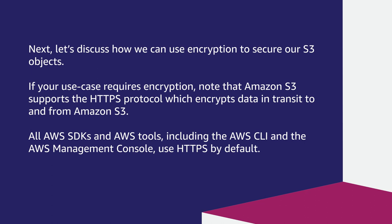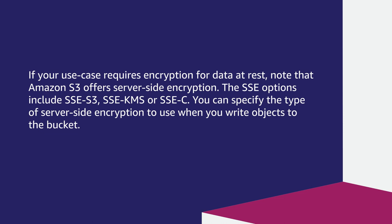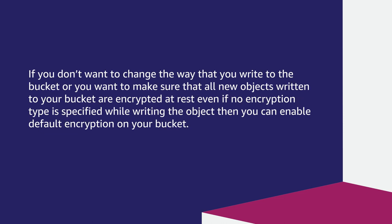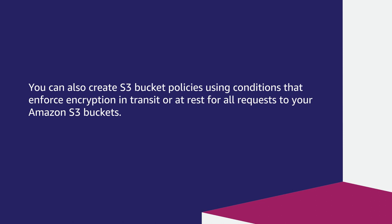Next, let's discuss how we can use encryption to secure our S3 objects. If your use case requires encryption, note that Amazon S3 supports the HTTPS protocol, which encrypts data in transit to and from Amazon S3. All AWS SDKs and AWS tools, including the AWS CLI and the AWS Management Console, use HTTPS by default. If your use case requires encryption for data at rest, note that Amazon S3 offers server-side encryption. The SSE options include SSE-S3, SSE-KMS, or SSE-C. You can specify the type of server-side encryption to use when you write objects to the bucket. If you want to make sure that all new objects written to your bucket are encrypted at rest, even if no encryption type is specified during the upload, then you can enable default encryption on your bucket.